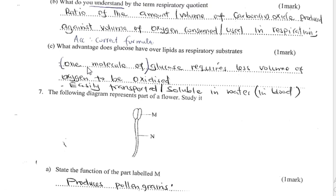Part C: What advantage does glucose have over lipids as a respiratory substrate? One molecule of glucose requires less volume of oxygen to be oxidized. Glucose is also soluble in water, making it easy to transport across the cell.